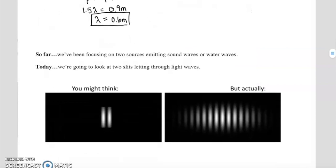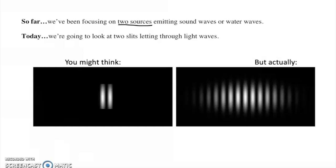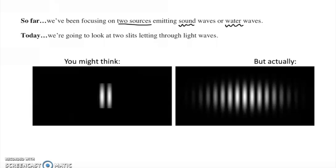So far, we have been focusing on problems like this, where there are two sources that are emitting sound waves or water waves. Today, though, we're going to be looking at two slits and eventually a single slit that is letting light waves through. So we're going to make a transition here to instead of looking at sources, we're going to look at slits that kind of serve as sources. And instead of looking at sound or water waves, we're now going to be focusing on light waves.